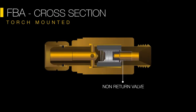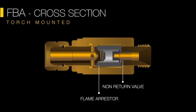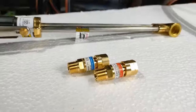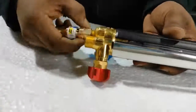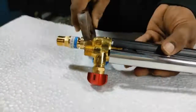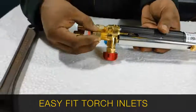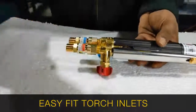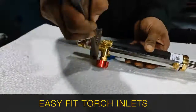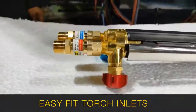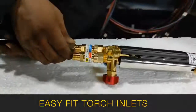Flashback arrestors provide two-level protection with a non-return valve and flame arrestor. They fit easily into the torch inlet with a range of connections suited for different gases and torch designs.